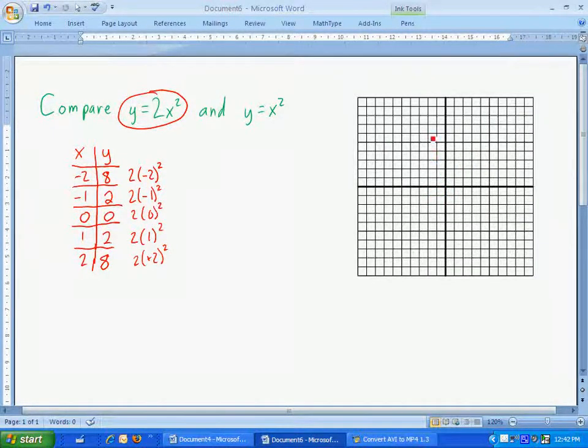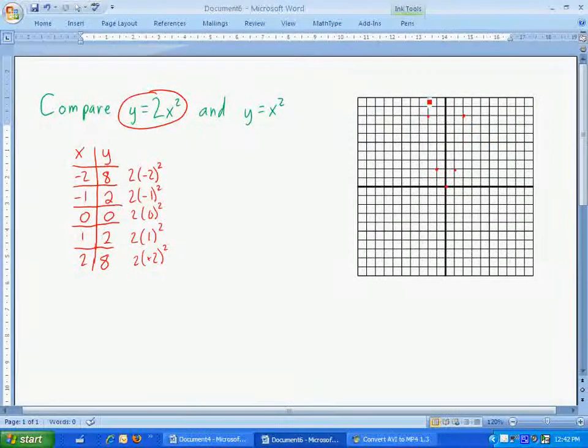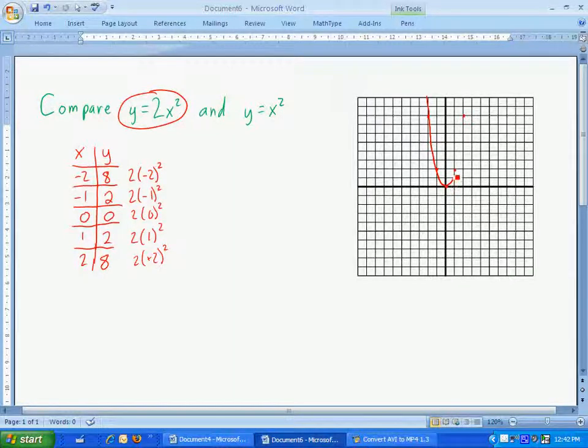When x was negative 2, y was 8. When x was negative 1, y was 2. When x was 0, y was 0. When x was 1, y was 2. And when x was 2, y was 8. Just like that. So I've got my points. Now I'm going to create one smooth line. This should not be a zigzag line. It should not be straight lines between the points, but it should be one smooth line that curves and then goes back up, just like that.